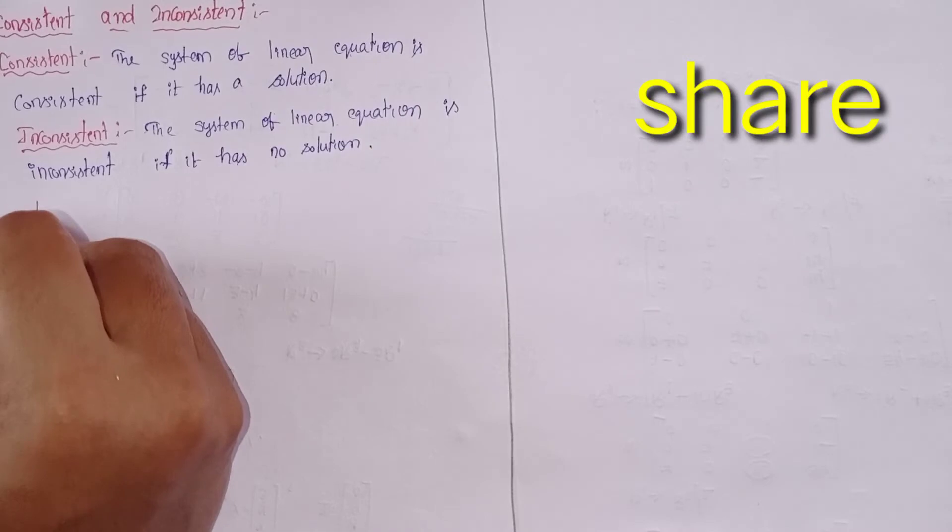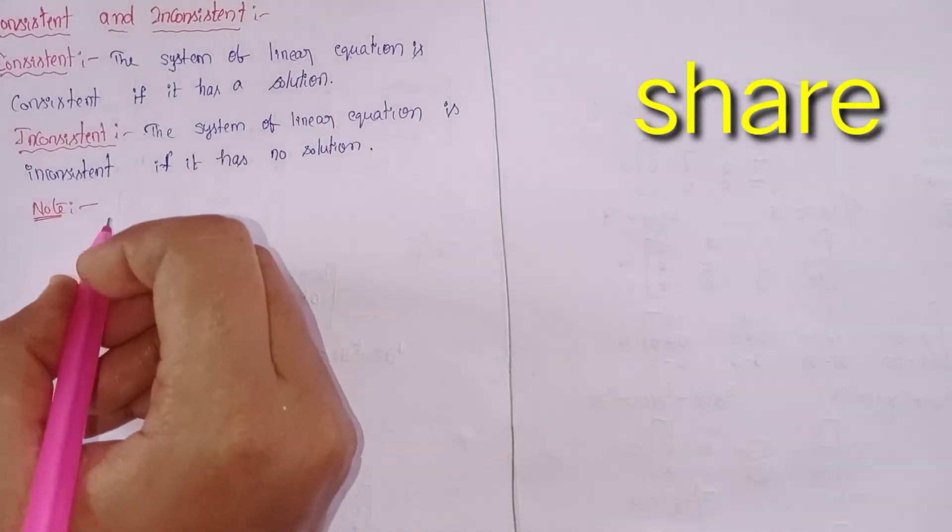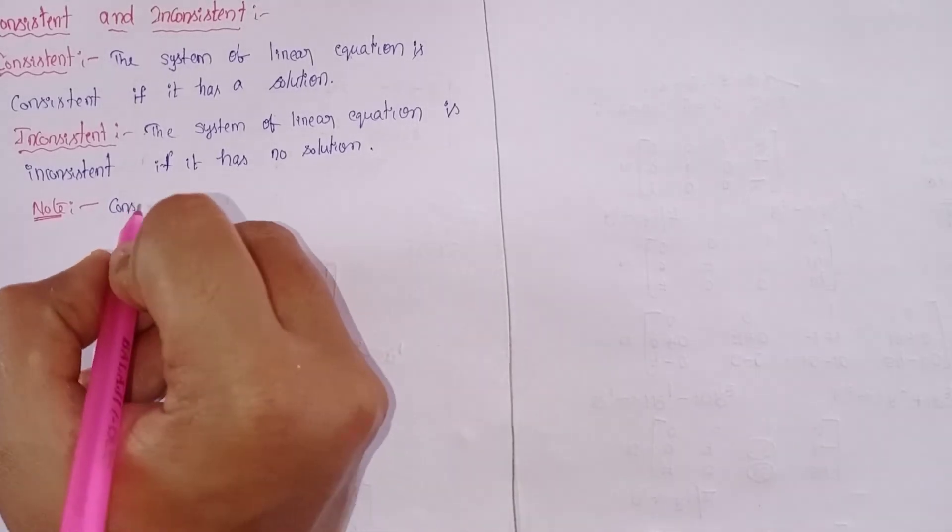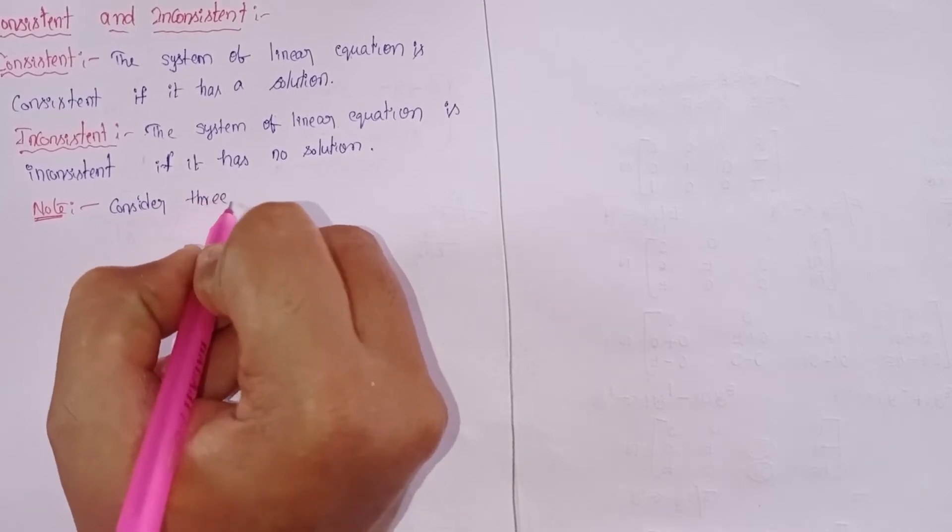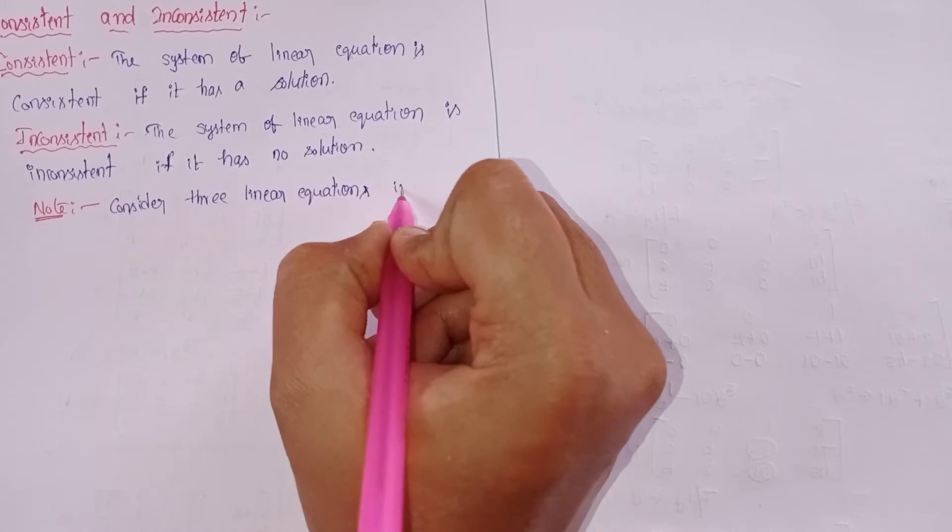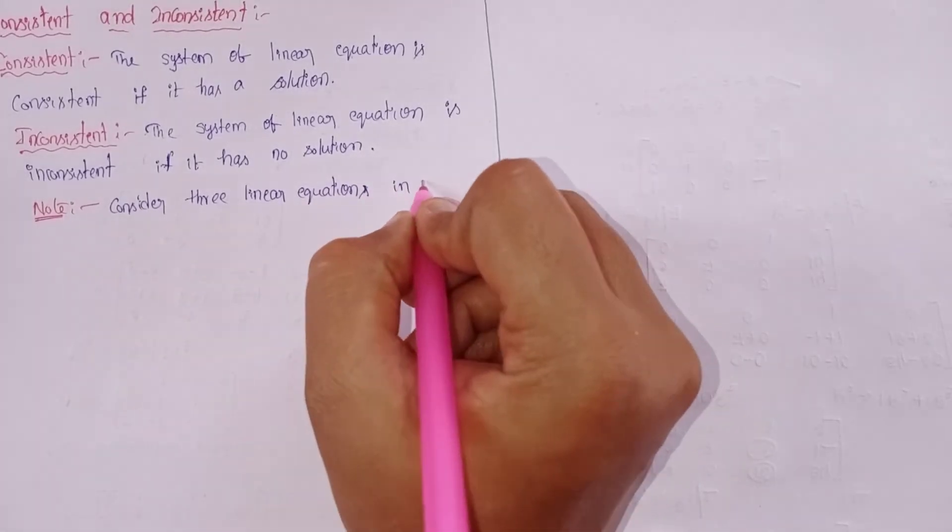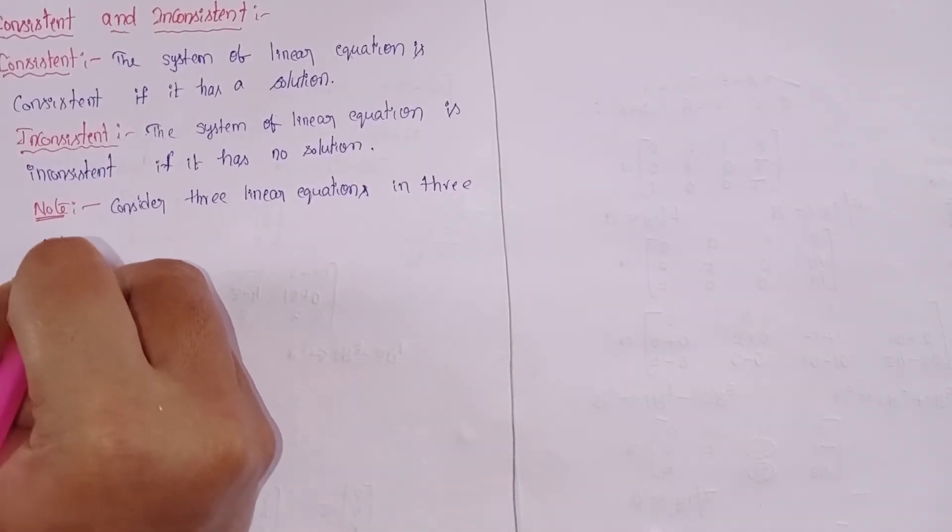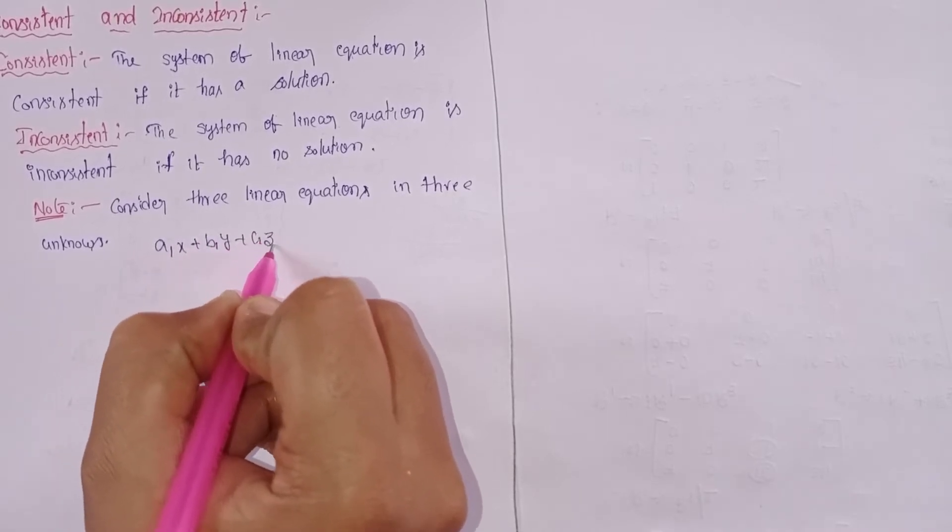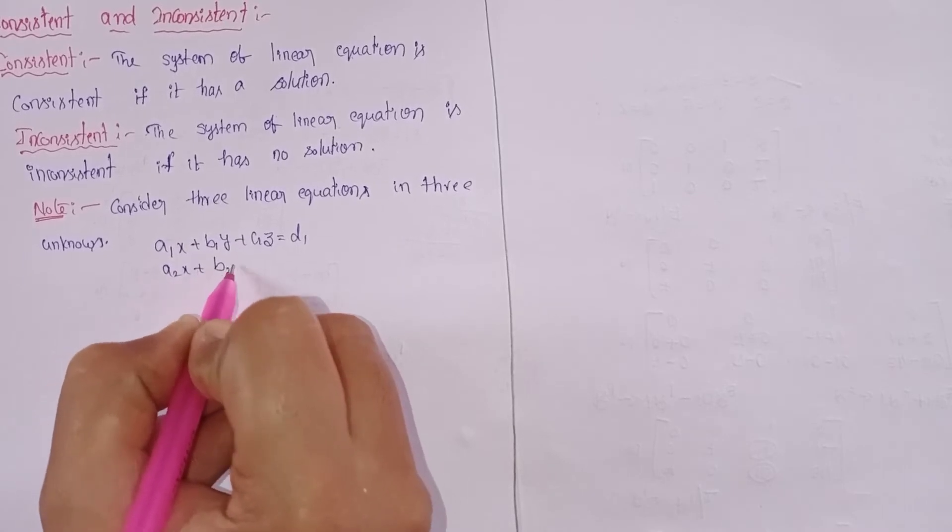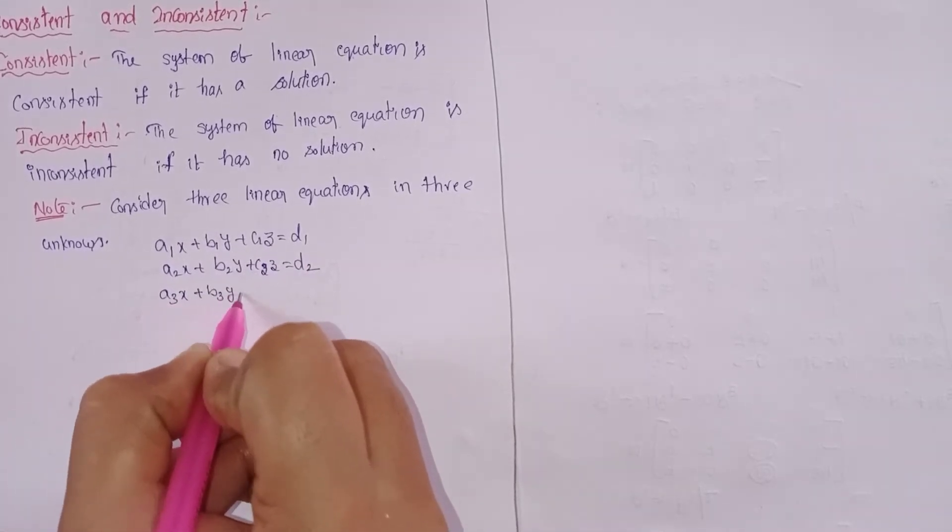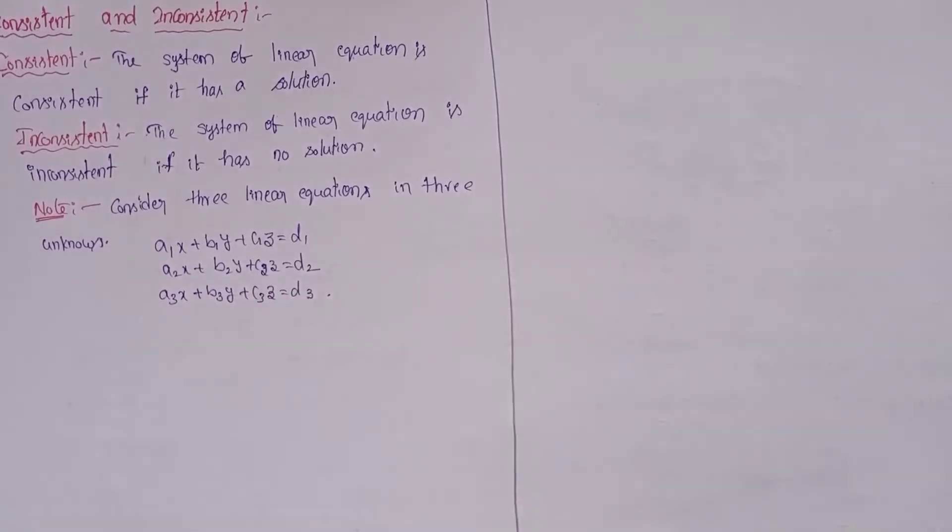Note point: Suppose we take here three equations. I will consider three linear equations in three unknowns. a1·x + b1·y + c1·z = d1, a2·x + b2·y + c2·z = d2, a3·x + b3·y + c3·z = d3. You can write this in the form of AX = D.